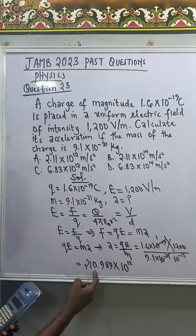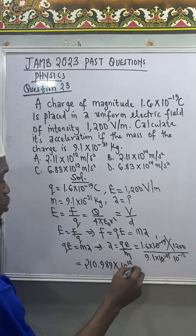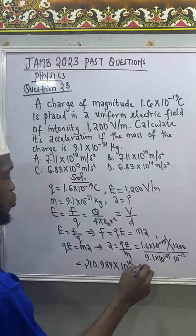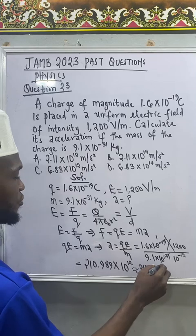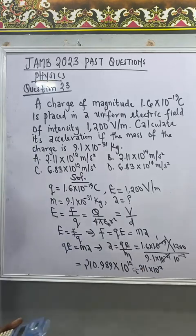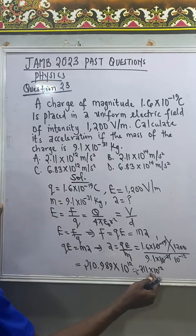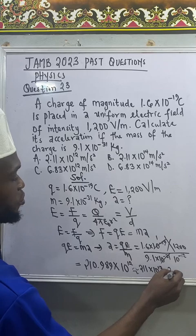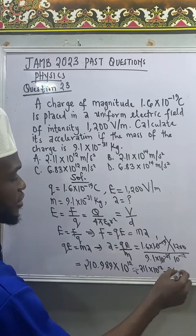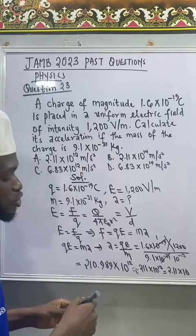So I can approximate this to the nearest whole number as 211 times 10 to the power of 12. Now in order to get what is inside the option, I can decide to shift this point twice so that I can have 2.11 in standard form. 2.11 times 10 raised to the power of, since I move it twice, that means the power here will increase to 10 raised to power 14.